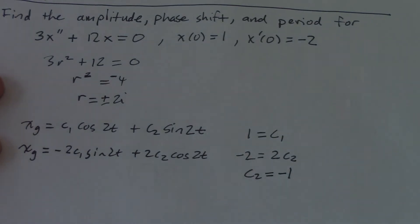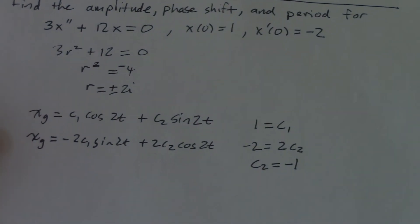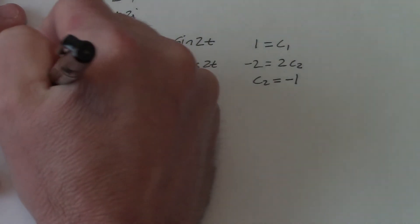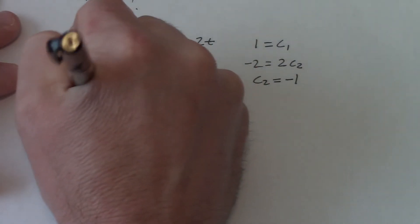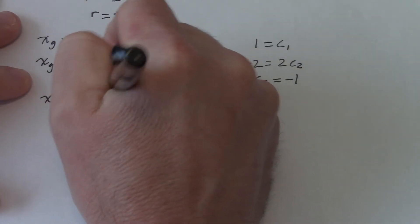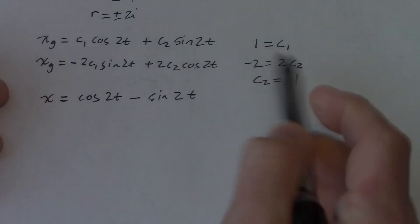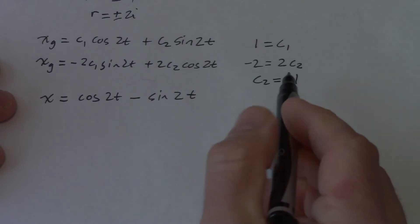So C2 equals negative 1. And I purposely made this one to come out kind of nice and pretty, but they probably won't always. All right, so my particular solution would be that x equals cosine 2t minus sine 2t. So my C1 is 1, C2 is negative 1.